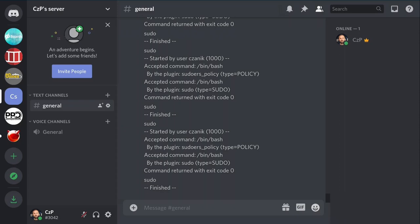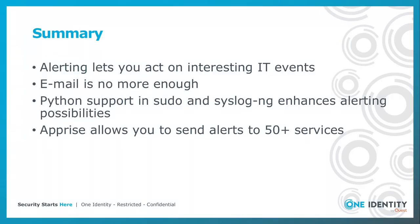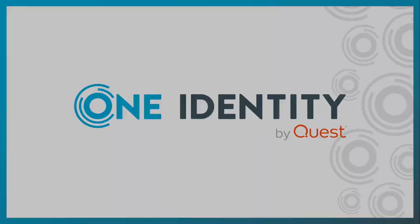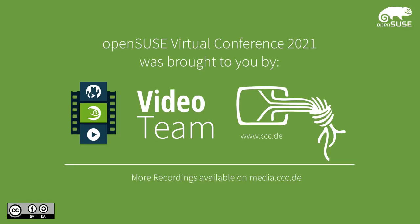And here you can see a screenshot that the alerts arrived at the destination from sudo. Let me summarize: alerting lets you act on interesting IT events, but recently email alerts are no longer enough — you want to send messages to different notification services. Python support in sudo and syslog-ng enhances your alerting possibilities, and Apprise allows you to send alerts to over 50 different services. If you have questions, you can reach me by email or on Twitter. Thank you for your attention.